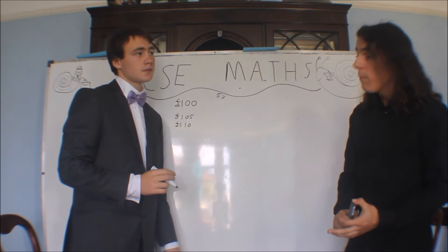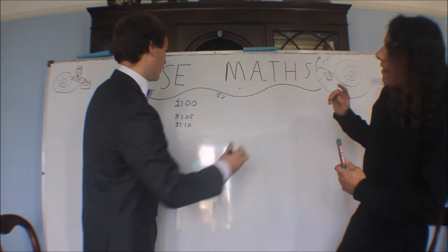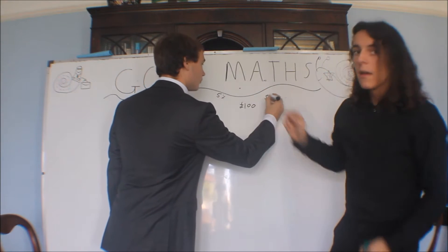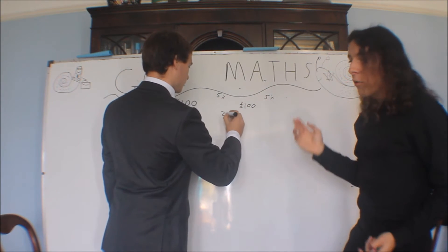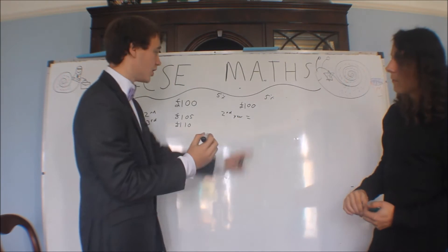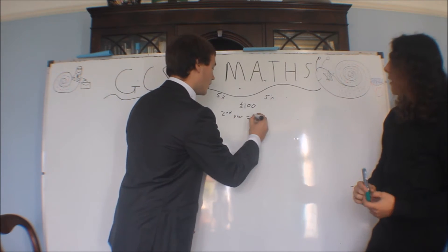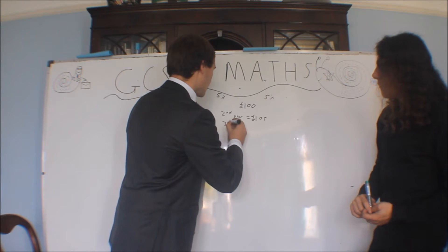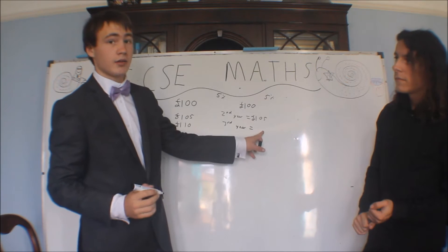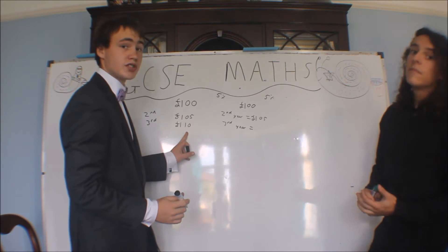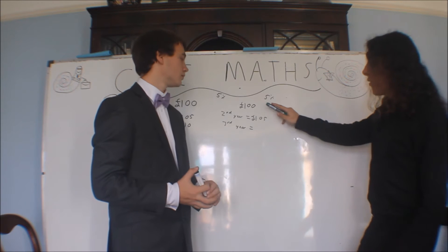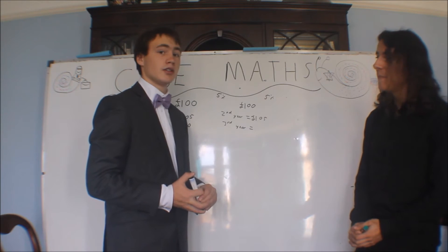But if that was compound interest, it works differently. It doesn't just work off the original value you put in. Every new value, it increases that value by 5%. So for the second year you'd increase that by 5%, so that'll still be £105. However, on the third year you'd increase that by 5%, which is harder to work out in my head, but it'll be more than £110. And this gets higher and higher and higher the longer you do it for, so compound interest is better.